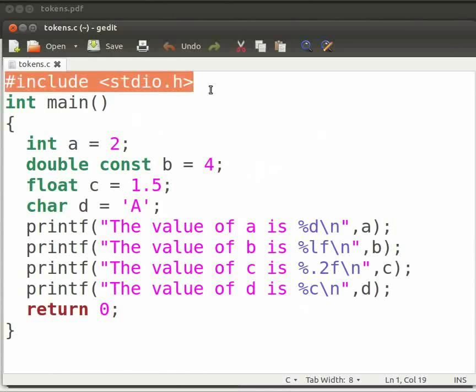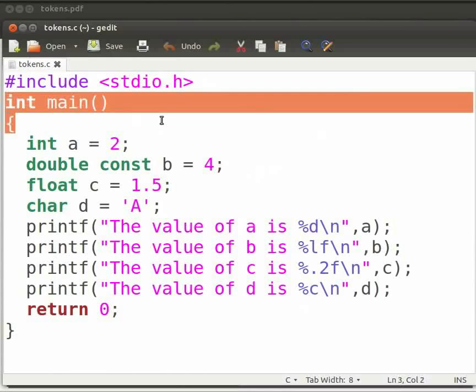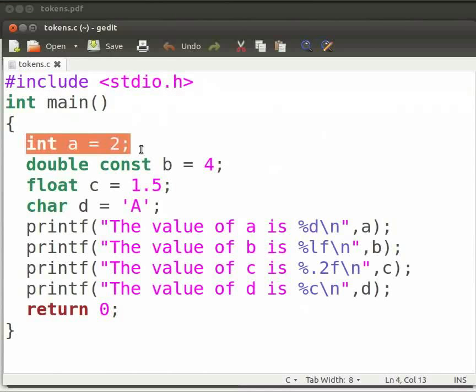This is our header file. This is our main function. Here, int is a keyword. The compiler knows the meaning of keywords. A is an integer variable. We have assigned a value of 2 to it. This is called initialization.